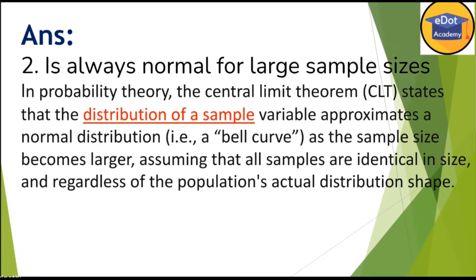In probability theory, the Central Limit Theorem states that the distribution of sample variables approximates a normal distribution — that is, a bell curve — as the sample size becomes larger. So if you are taking a bigger sample from a population, its distribution will be normal, and we'll get a line matching with the population mean. Keep this in mind.